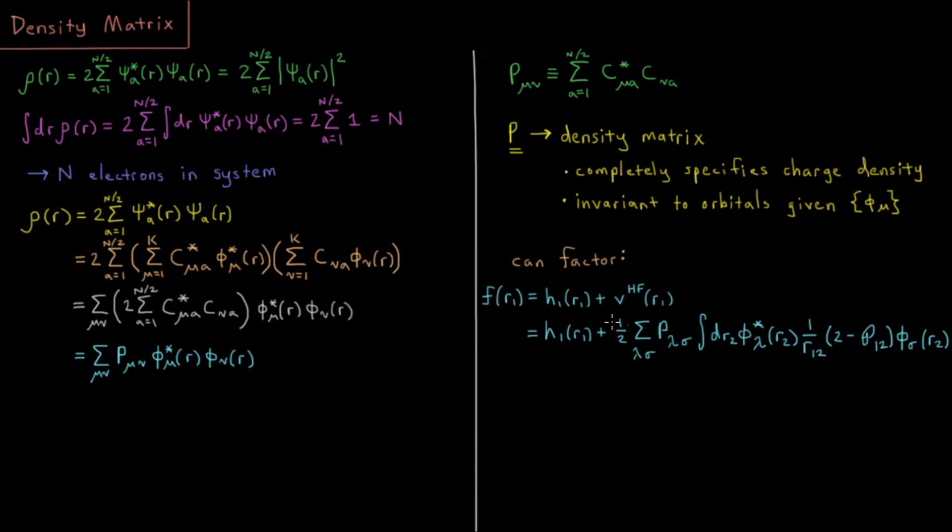This is really nice because now we have an expression for the Fock operator which is completely independent of the form of our individual spatial orbitals and only depends on what our basis functions are. Both the density matrix element and our basis functions are invariant to the orbitals. This is a nice expression for the Fock operator where we have to update fewer things in order to be able to correctly solve these Hartree-Fock equations, which the density matrix is quite helpful for moving forward.